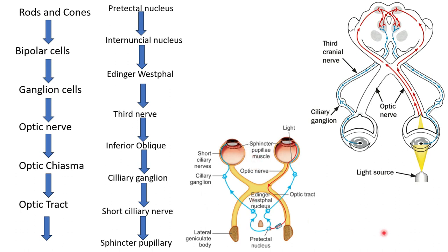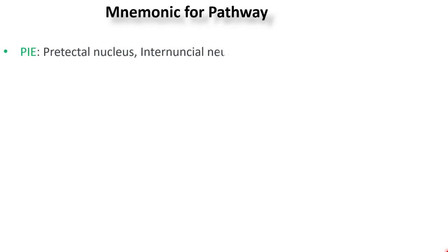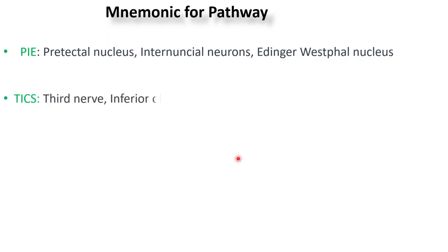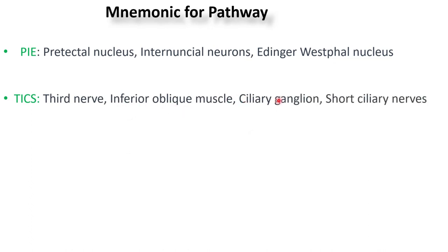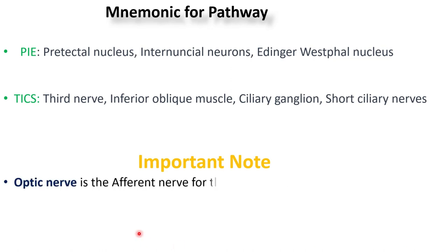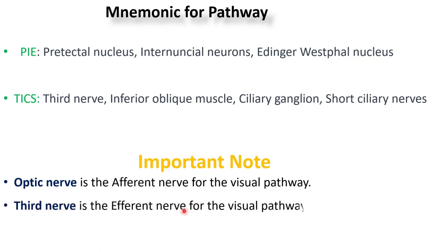There is a mnemonic to remember the pathway from the pre-tectal nucleus to the sphincter pupillary muscle: PIE TICS. PIE stands for pre-tectal nucleus, internuncial nucleus, and Edinger-Westphal nucleus. TICS stands for third nerve, inferior oblique muscle, ciliary ganglion, and short ciliary nerves. An important one-liner note: the optic nerve is the afferent nerve for the visual pathway, and the third nerve is the efferent nerve for the visual pathway.